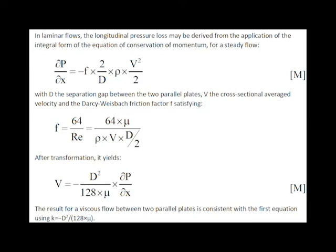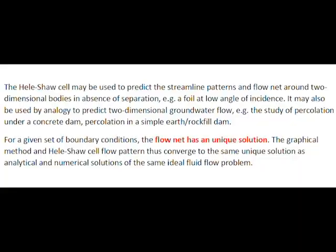In this equation, d is the separation gap between the two parallel plates. The Darcy friction factor is equal to 64 divided by the Reynolds number for a laminar flow. After transformation, we obtain the classical relationship linking the velocity to the longitudinal pressure gradient.